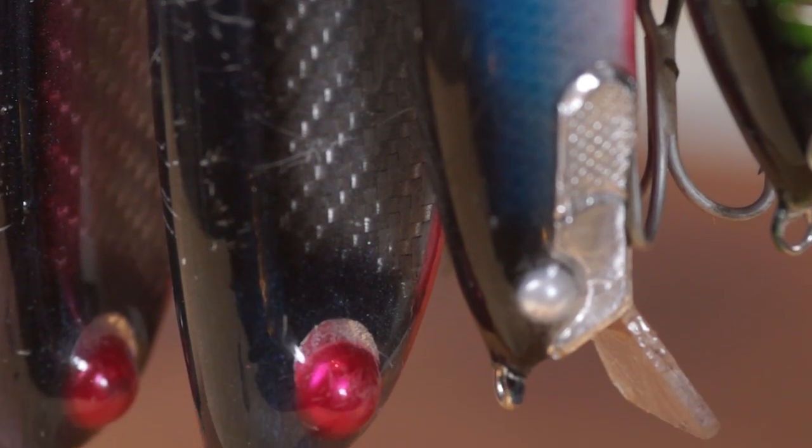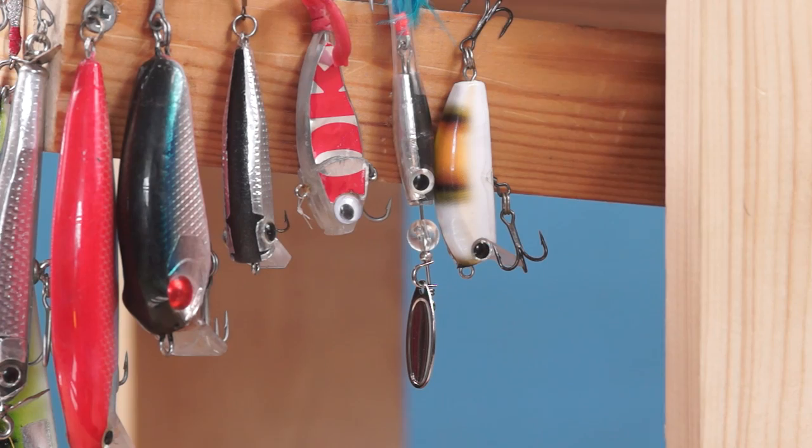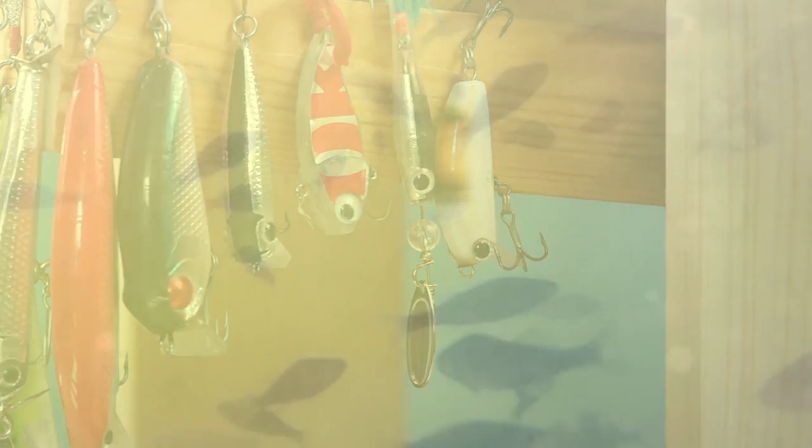I find it's often my larger baits that seem to collect the scars from pike teeth. With smaller lures I can start to attract the attention of less toothy freshwater predators like perch.